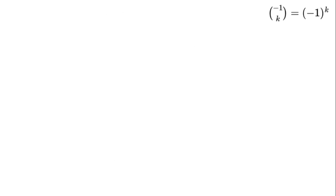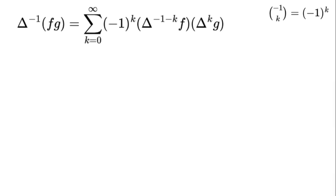So delta to the power of negative 1 times (f times g) equals the sum from k equals 0 to infinity of negative 1 to the power of k times delta to the power of negative 1 minus k times f times delta to the power of k times g.